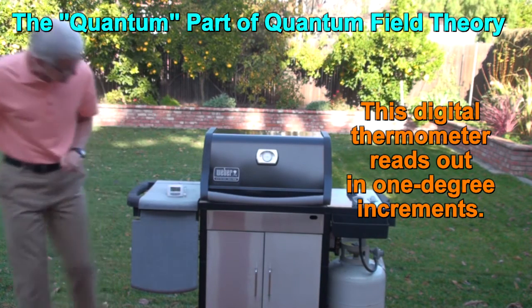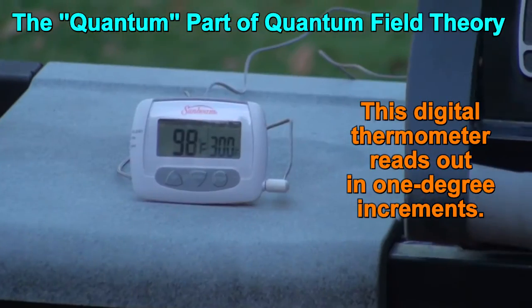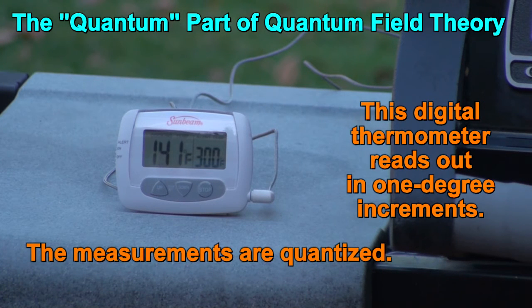Now we live in the digital age, and we use thermometers like this one. It reads out the temperature in one degree increments. When you insert it in the barbecue, the temperature only shows integer values. The measurements are quantized.